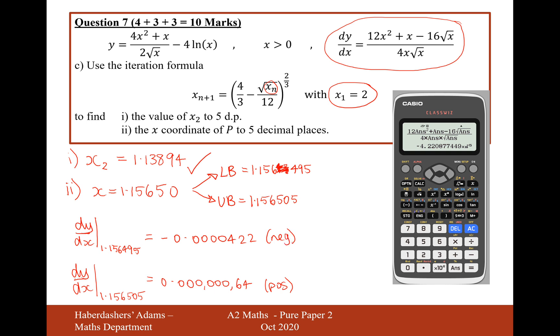Then you have to write your conclusion, which is, given that there is a change of sign in between 1.156495 and 1.156505, there is a root in between these two values here, so therefore the solution can be written as 1.15650, rounded to the nearest five decimal places. So there we are, that's your answer for this question here, and you have to prove it by doing an upper bound and a lower bound, and given that you're trying to find a stationary point, it's important that you plug it into this formula here. So there we are, that's the answer for question 7, we have 10 marks in total.